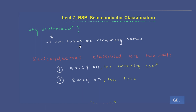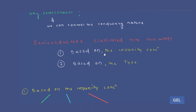Why do we choose semiconductors for electronic devices and circuit analysis? Because we can control the conducting nature of the material. At zero Kelvin, a semiconductor behaves like an insulator, and at 300 Kelvin it behaves like a metal. This controllable conducting property is why we choose semiconductors over insulators and metals.